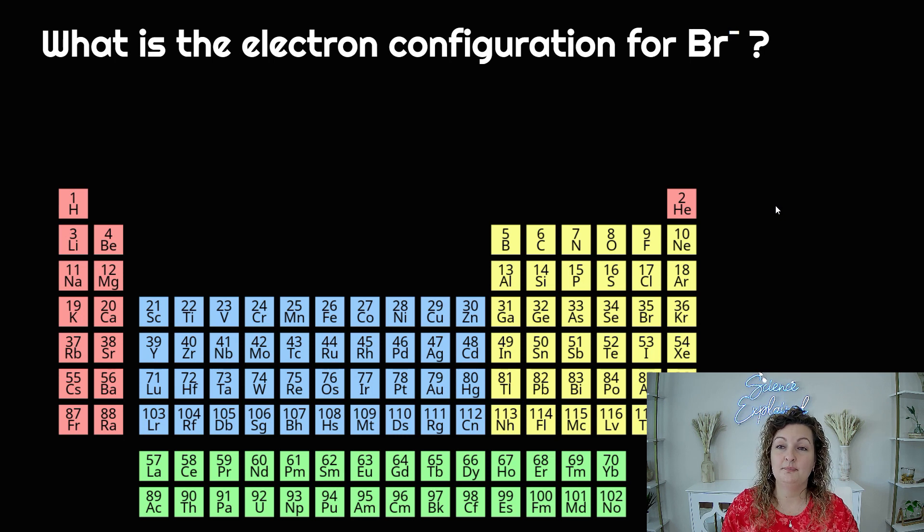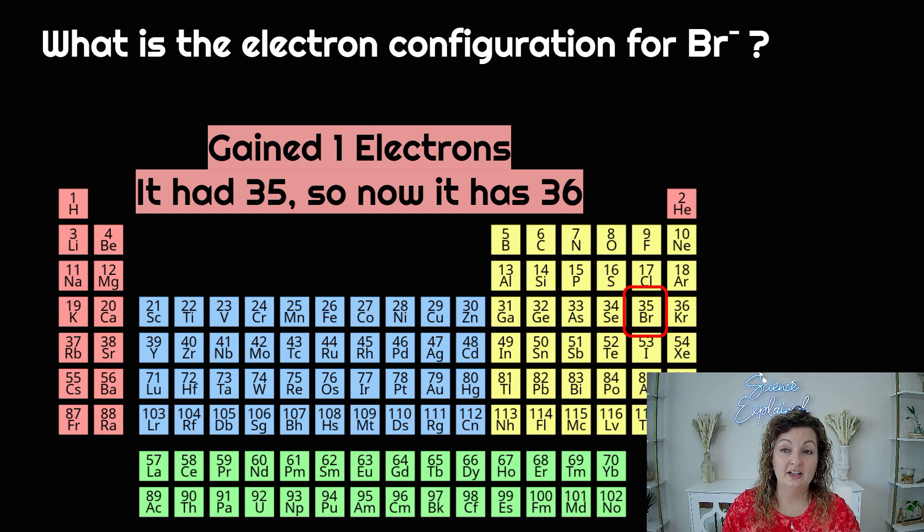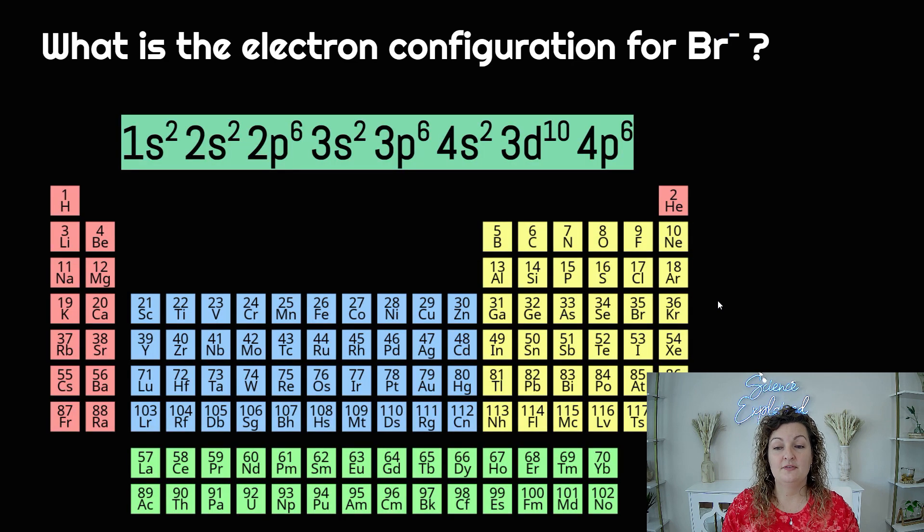What is the electron configuration of Br⁻? So we need to find bromine and it is right here, number 35. But we are negatively 1 charge. So it used to have in a neutral atom 35 electrons. However, this one gained 1 electron. Negatively 1 charge, so it gained 1. So we're going to go ahead and do the placeholder of 36, and we're going to have our endpoint for electron configuration right here. And you can start at the top and you can see how we did this one.